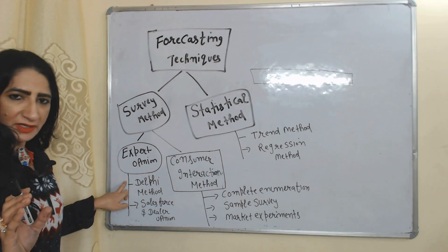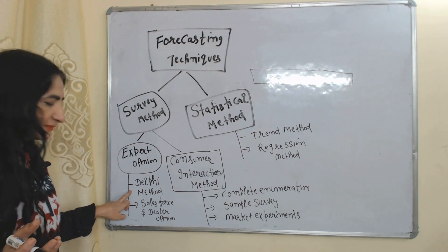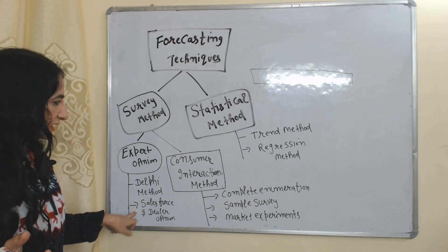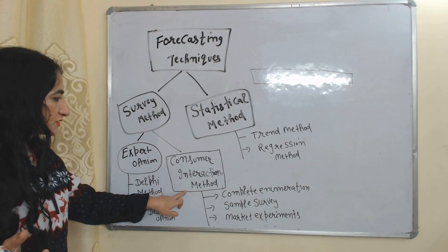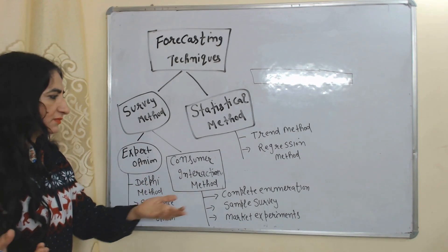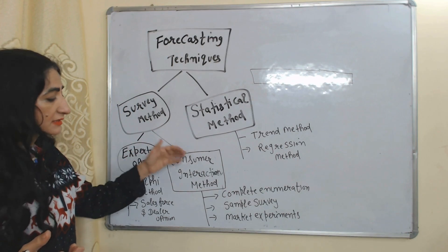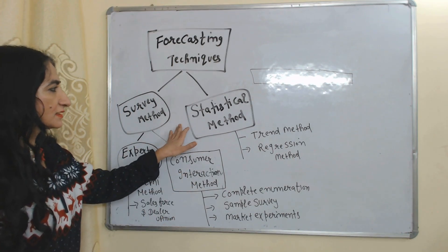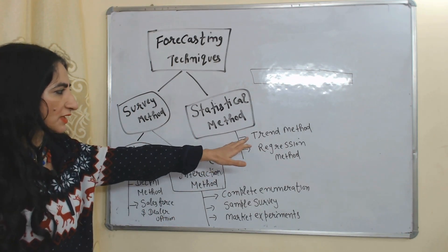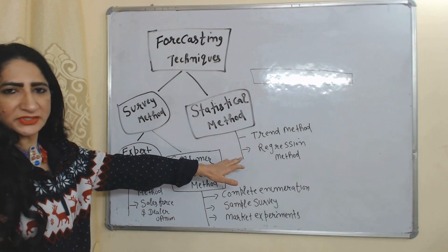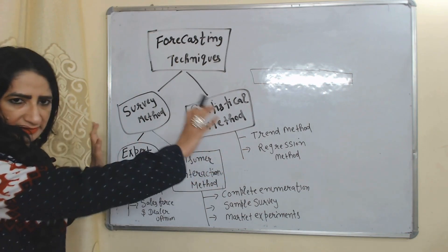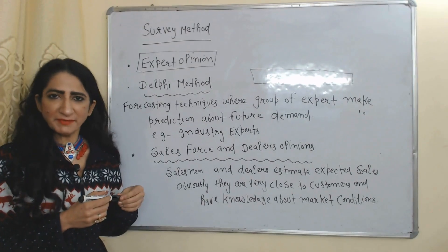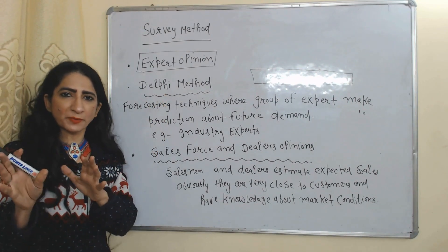Under expert opinion, we will study the Delphi method, sales force, and dealer opinion. Under consumer interaction method, we will study complete enumeration method, sample survey, and market experiment. Under statistical method, we will study trend method and regression method. We will now discuss each method one by one.